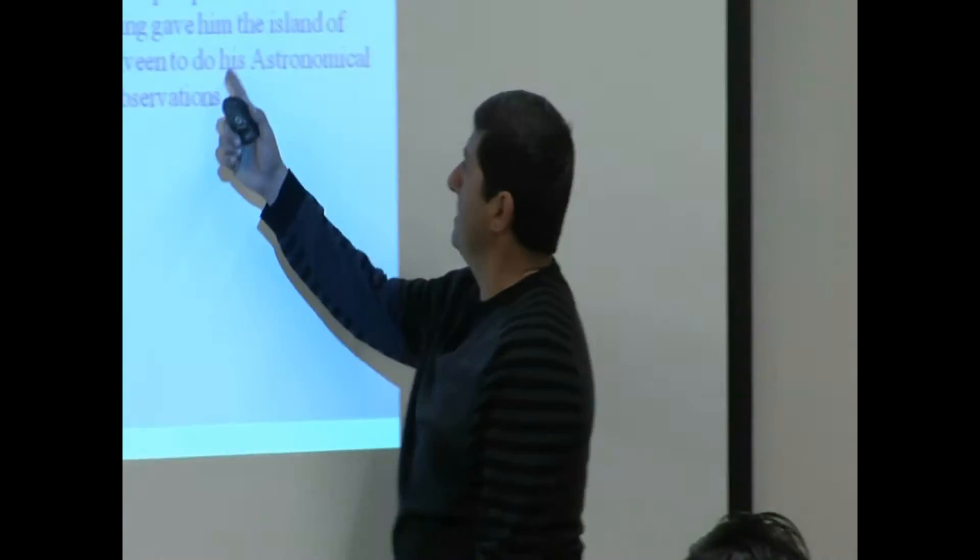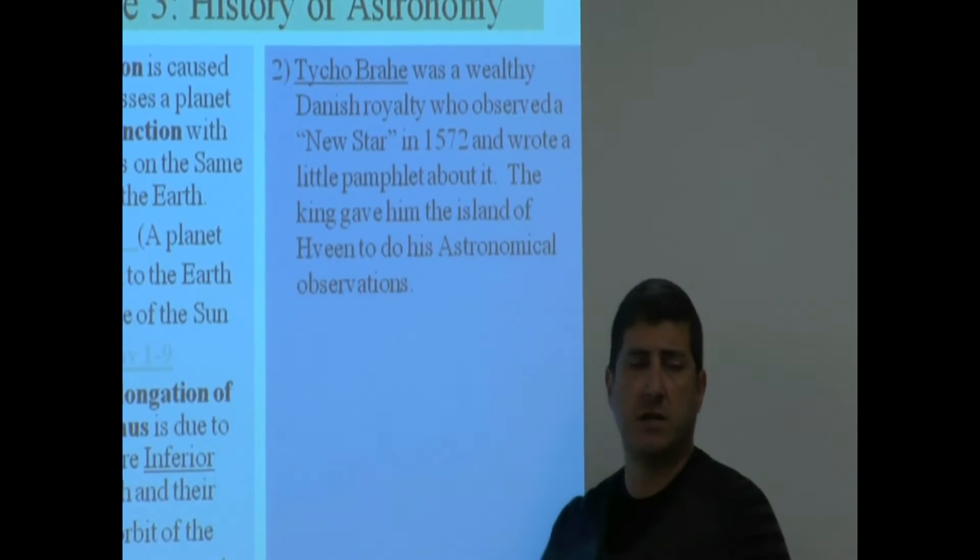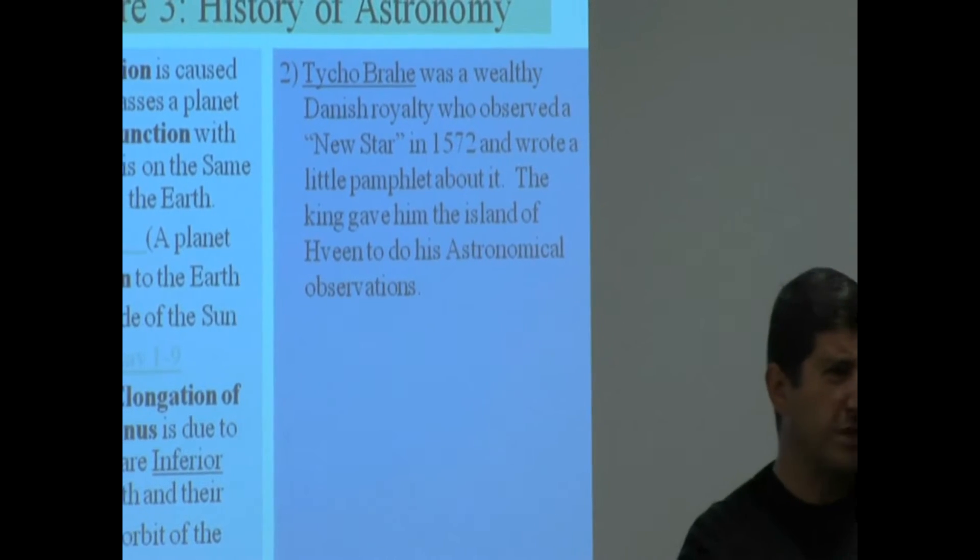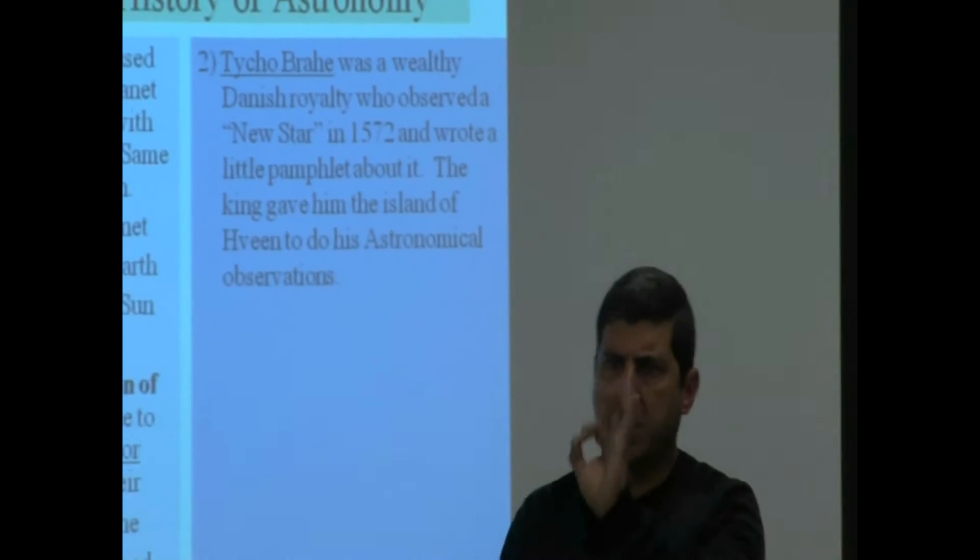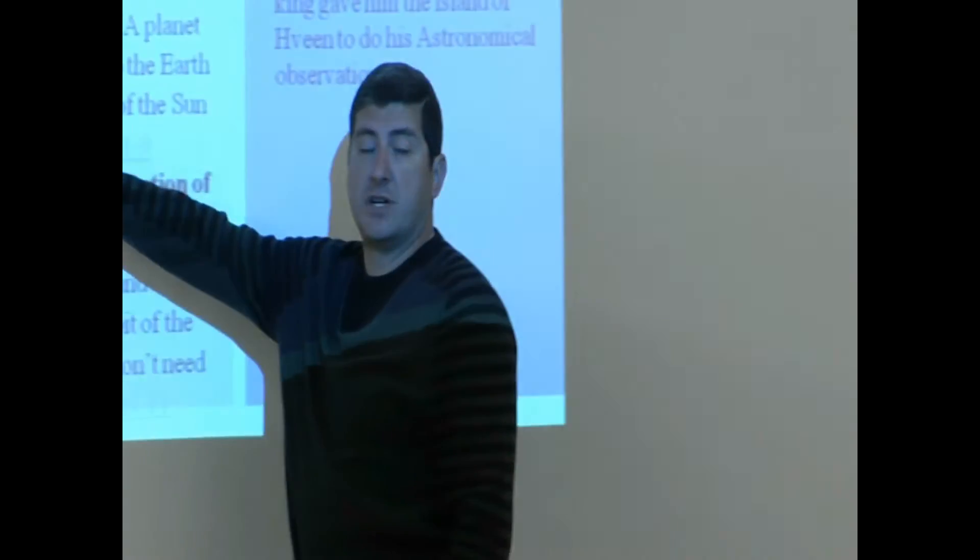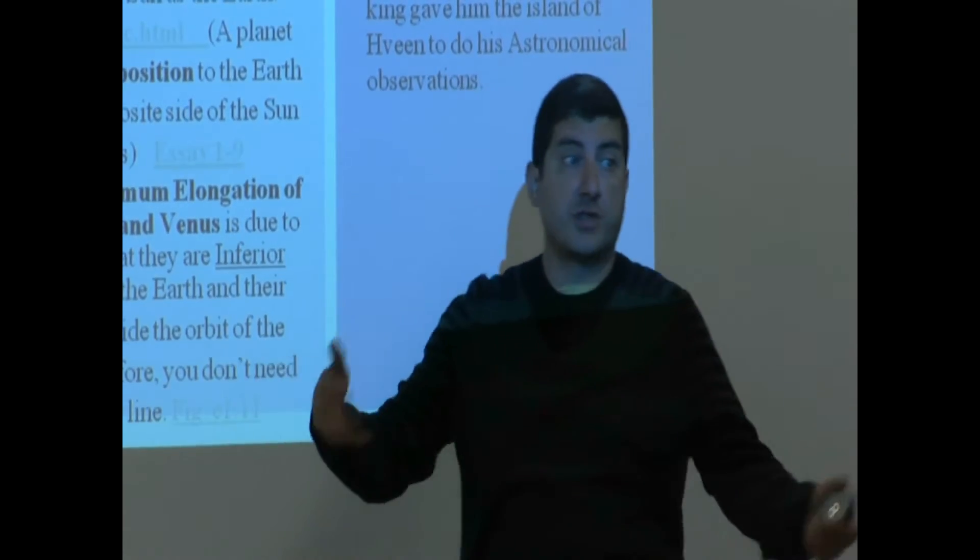Then he was given an island all by himself, probably close to Denmark, somewhere around there. He did astronomical observations meticulously for the planet's paths, and his goal was to discover a new model of the solar system. He didn't necessarily believe the heliocentric model, nor the geocentric model.